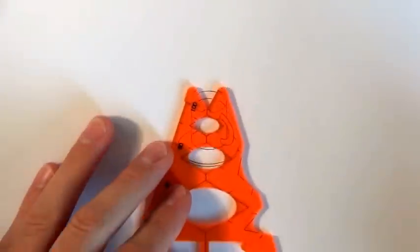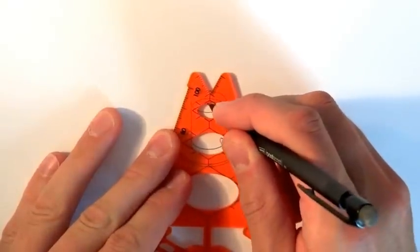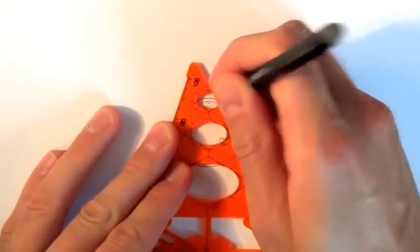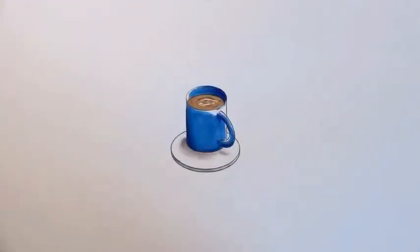Now just rub out any bits of pencil line in between. Going to put some little ripples in the beverage here, whether it's tea or coffee makes no difference, could be hot chocolate I suppose, just to give it a little effect of the moisture. Get your markers out and add some color, and there you've got a perfect 3D brew.